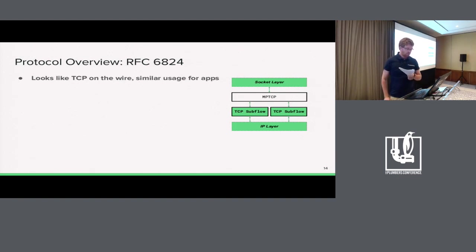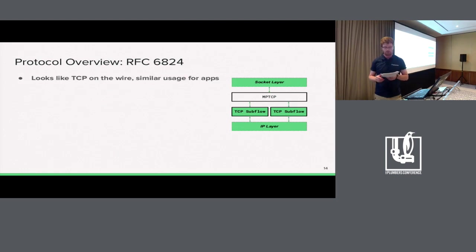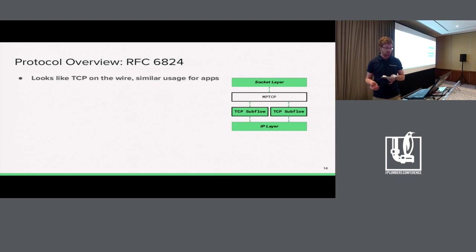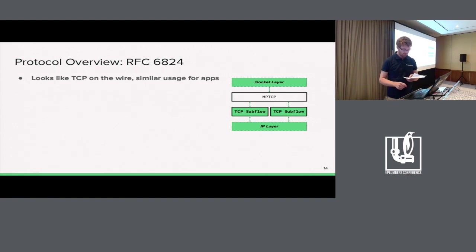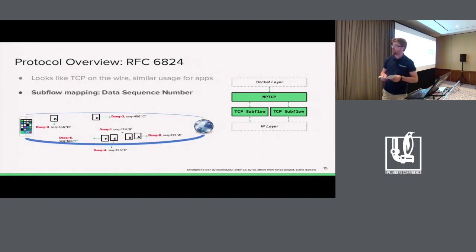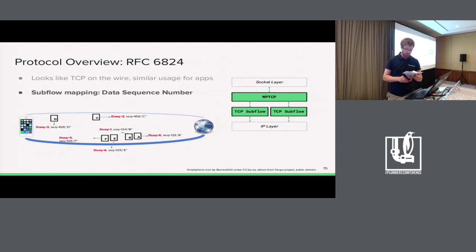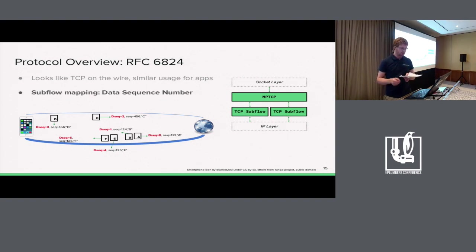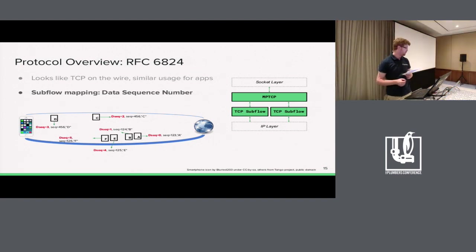What the protocol wants is that usage be similar for applications — if an application was using TCP previously, it should continue to do the same to use multipath TCP, except if it wants fine-grained control. One important notion in MPTCP is the data sequence number (DSS). To reconstruct a stream sent over multiple subflows, you need a dedicated data sequence number in addition to the TCP one, because you need something at the MPTCP layer.